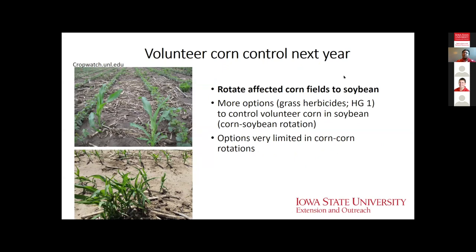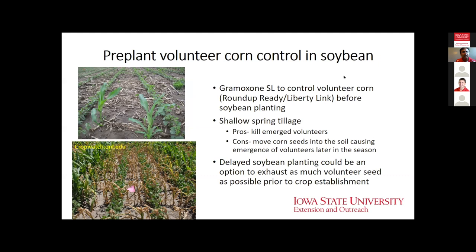Moving to next year's decisions: whether to go corn-to-corn or corn-to-soybean matters greatly. Going to soybeans is recommended because you have more herbicide options — specifically grass herbicides like the Group 1 herbicides — to control volunteer corn. That's kind of a no-brainer from a management standpoint, so there is a definite advantage to going to soybeans in those fields.